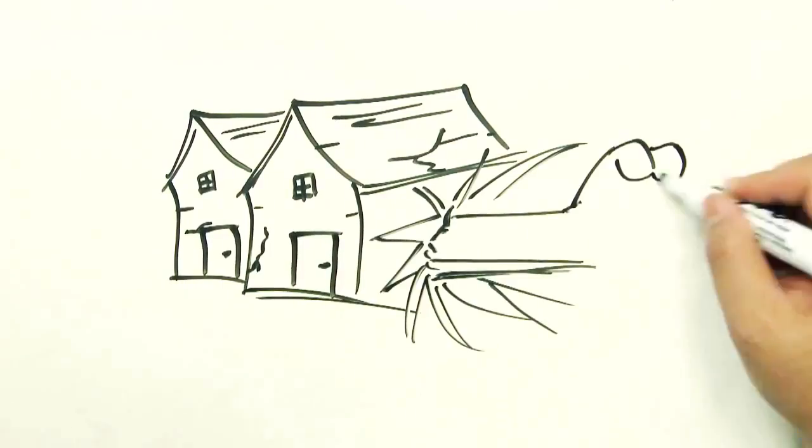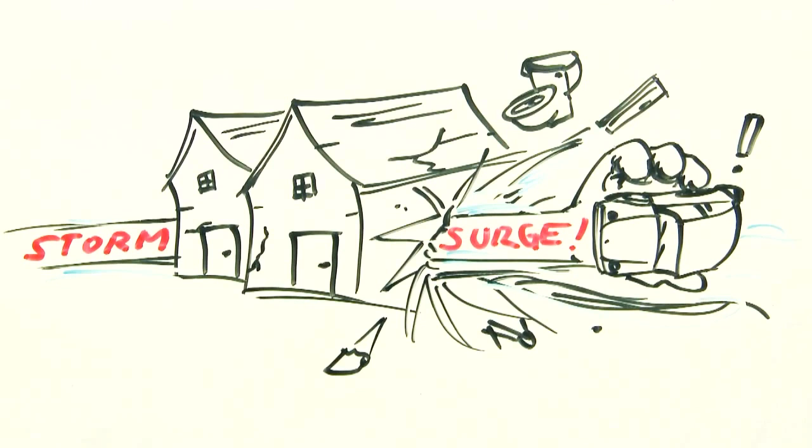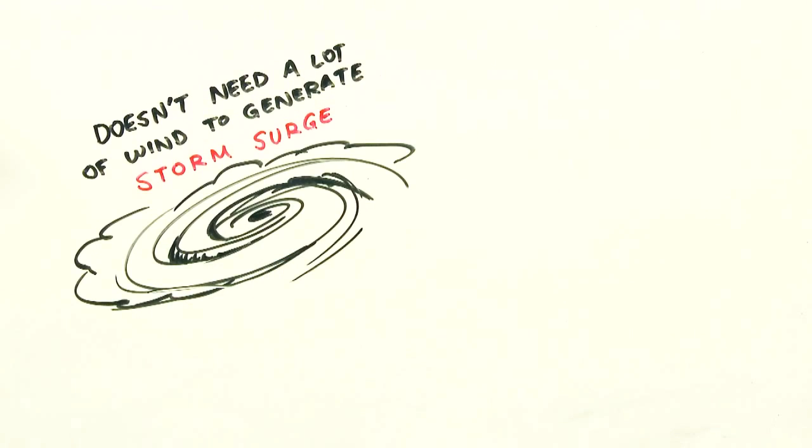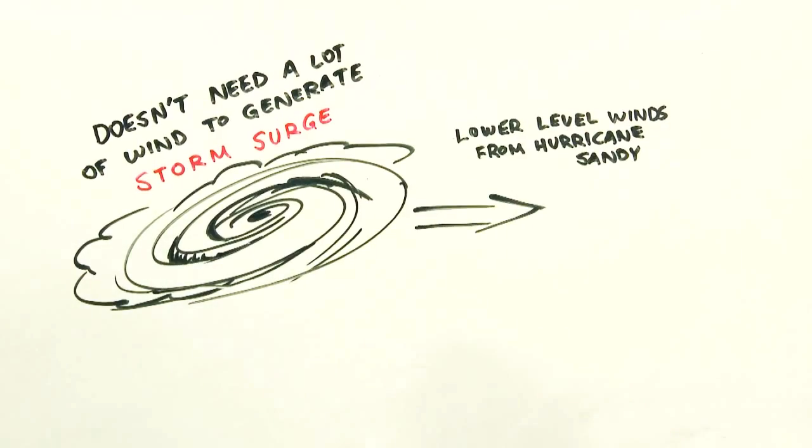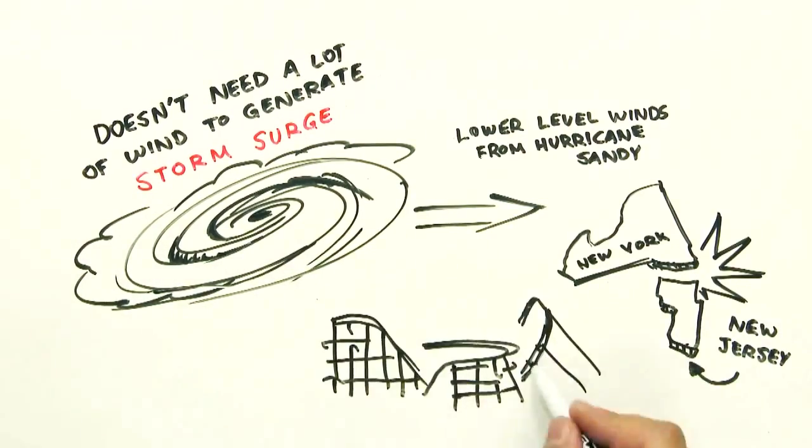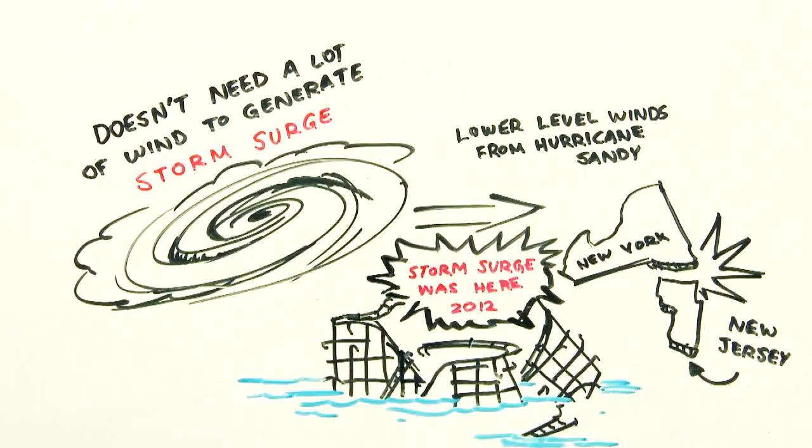And is it strong, able to carry away cars and demolish entire communities? It doesn't take extreme wind to make storm surge happen. Low-end hurricane winds from Sandy created a storm surge that leveled parts of New York and New Jersey in 2012.